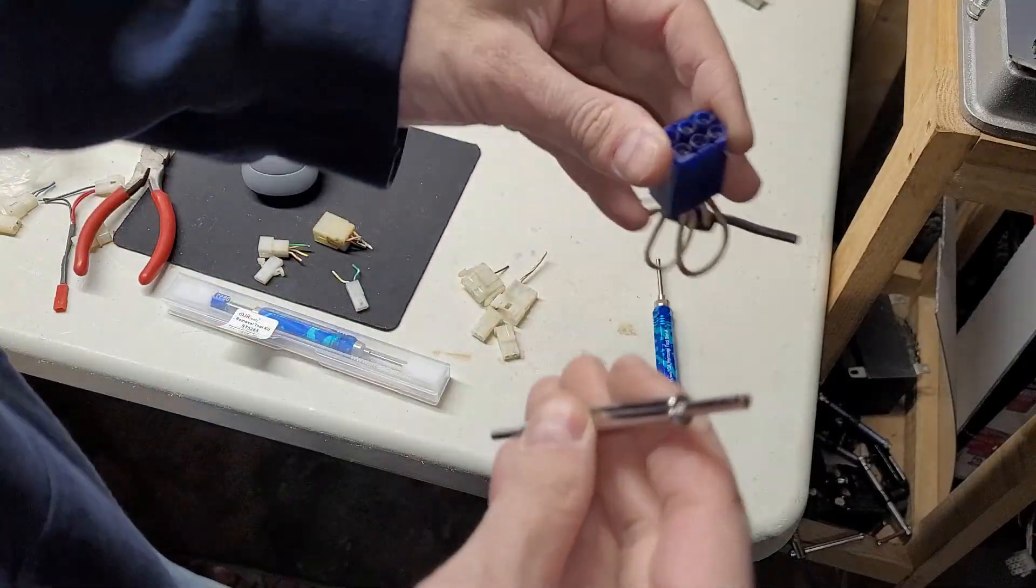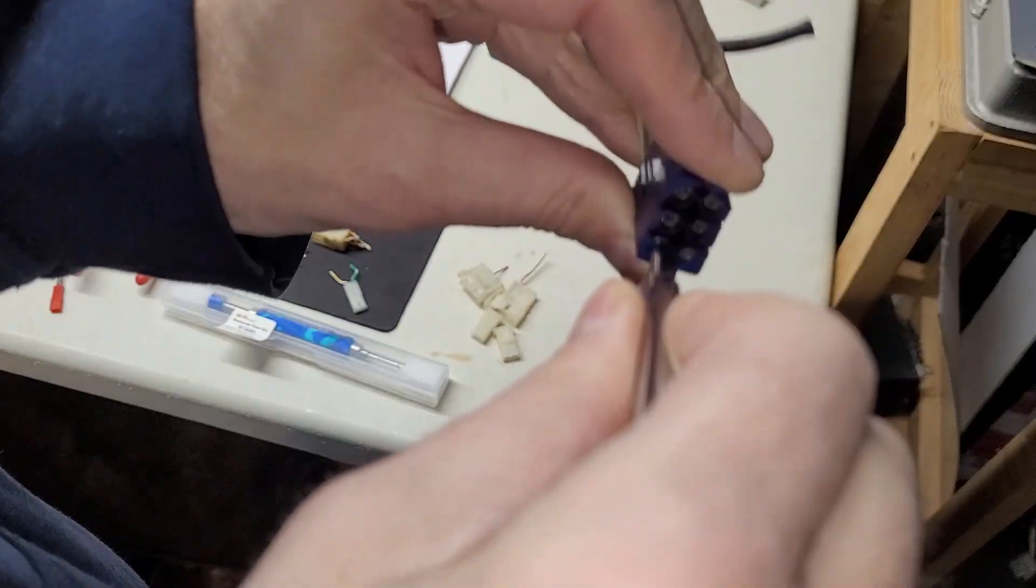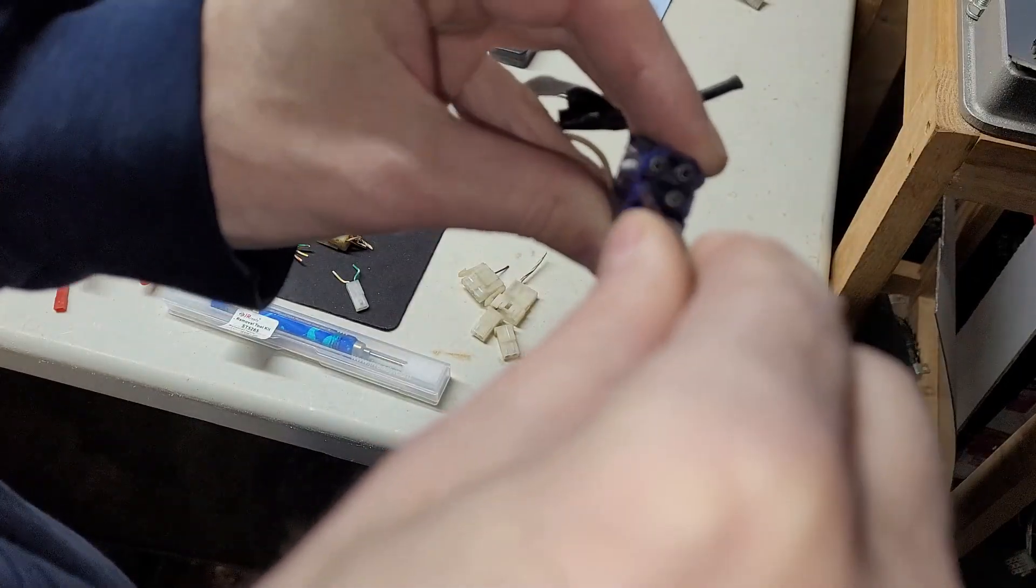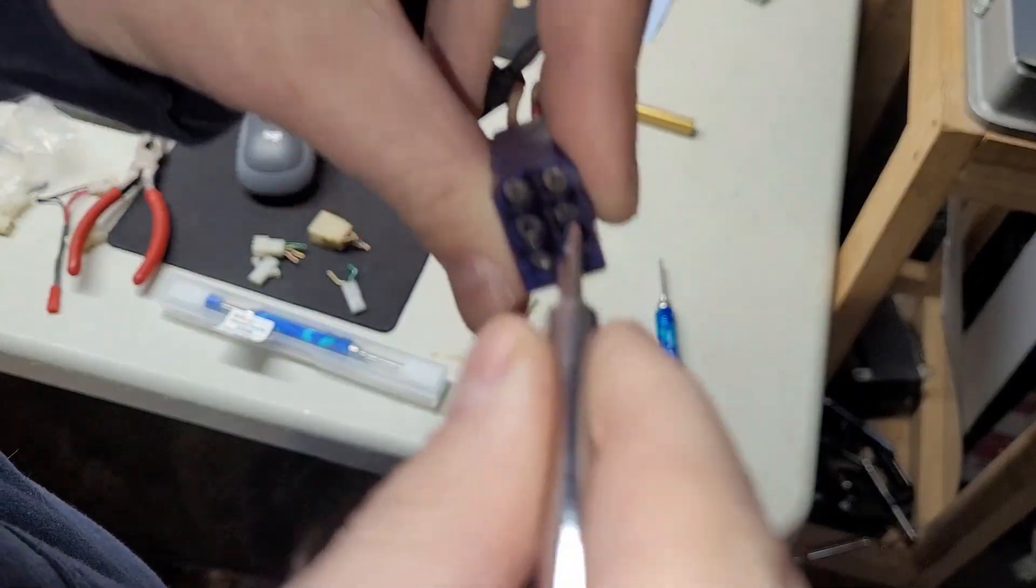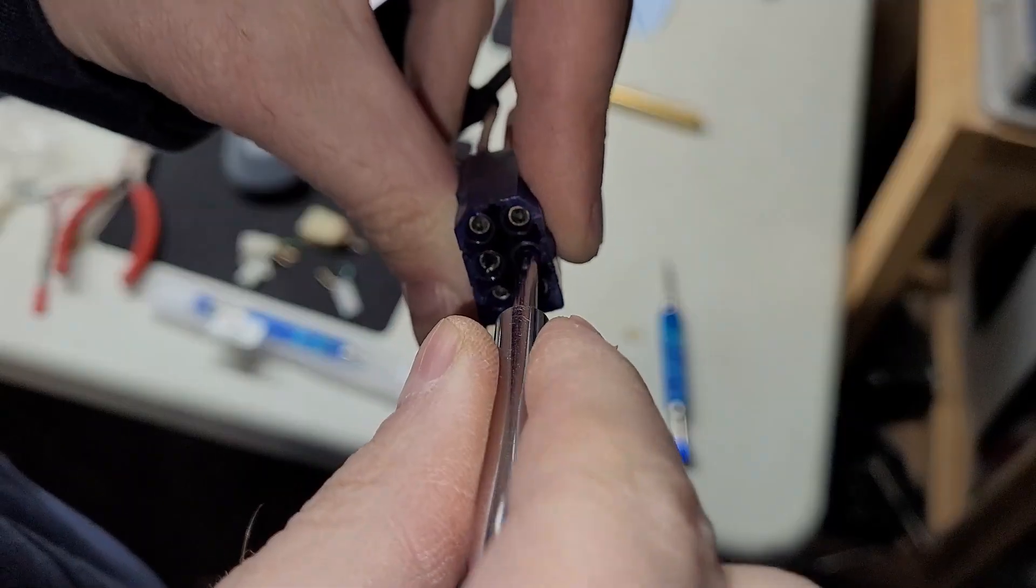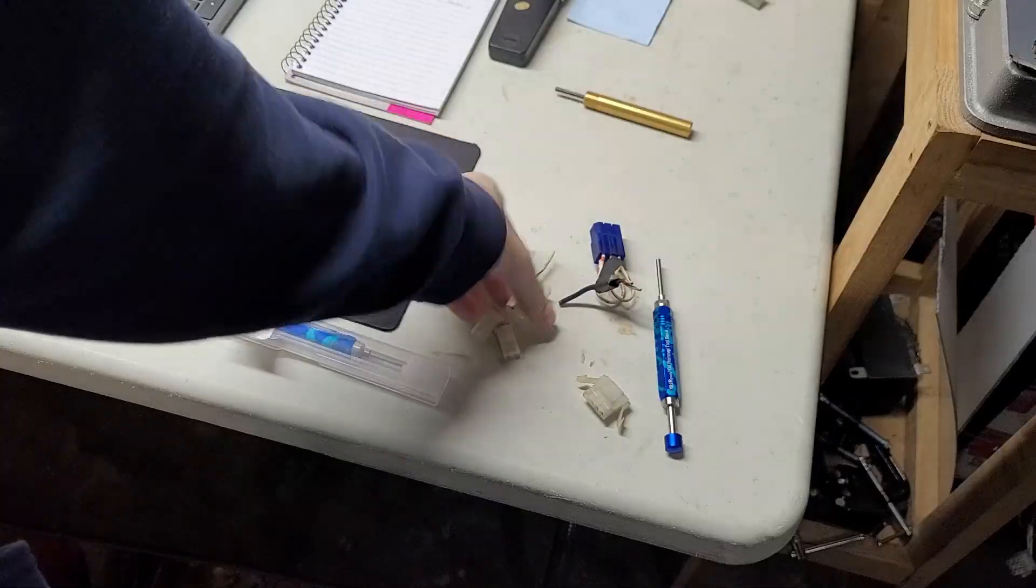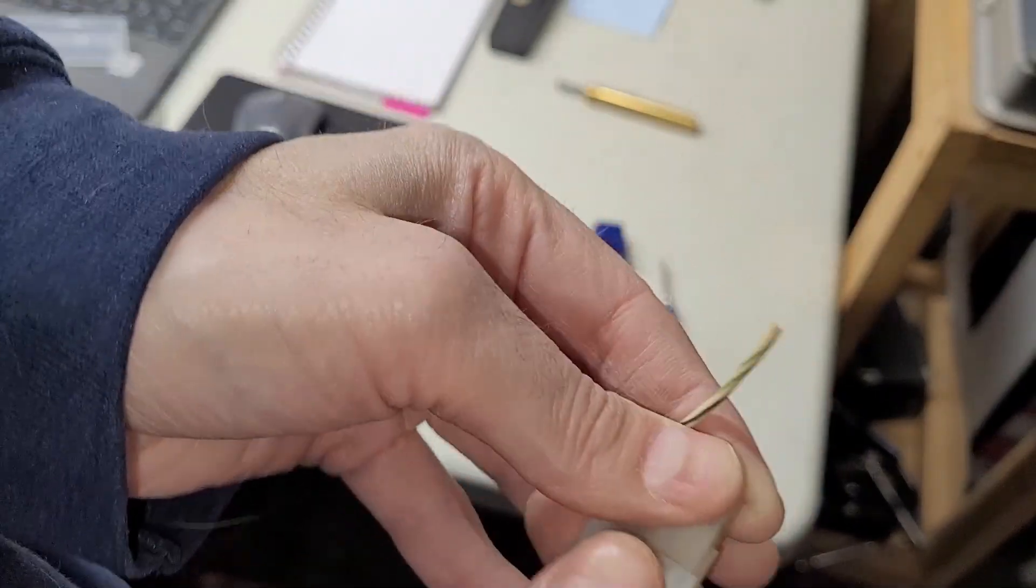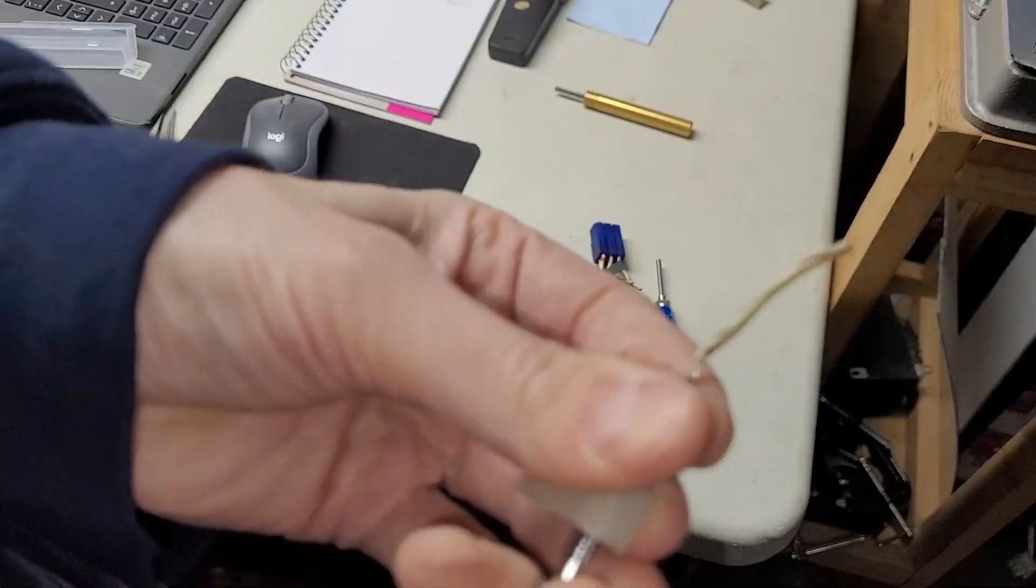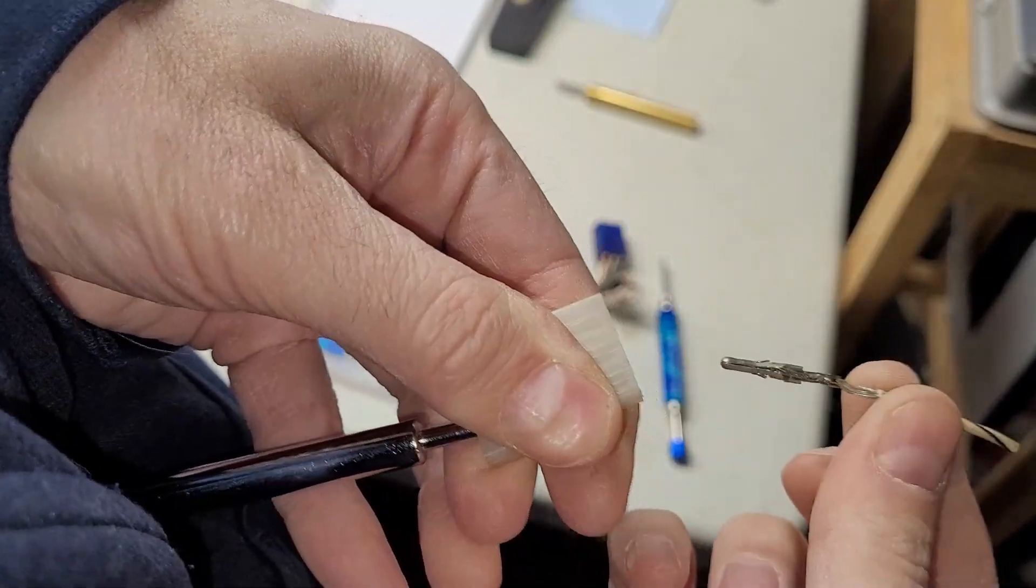I bought this stupid Amazon thing that has the 0.062 on one end and the 0.093 on the other. Problem is the 0.062 female side does not even fit over the female terminals, so it is completely useless. One of the ends of this tool won't even fit over the female terminals.